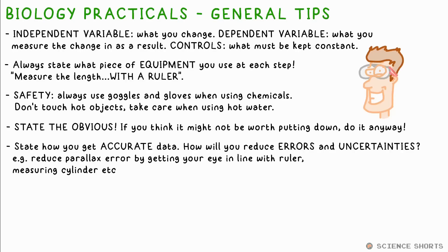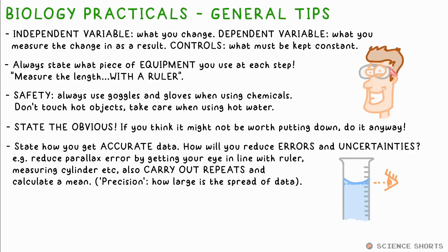Talk about the accuracy of measurements. How will you reduce errors and uncertainties? For example, you get your eye in line with the measurement when using a ruler or measuring cylinder to reduce parallax error.